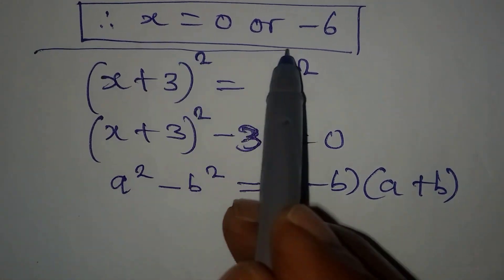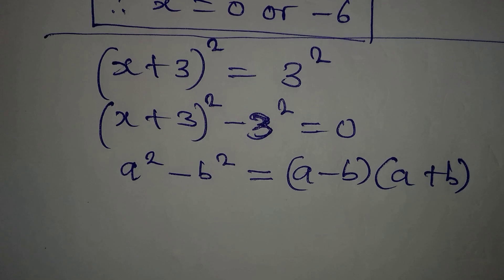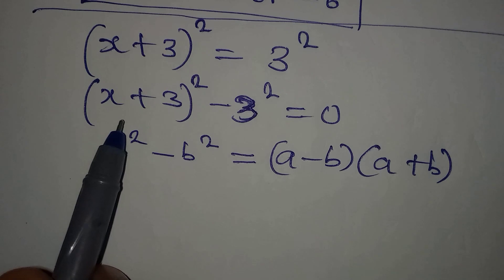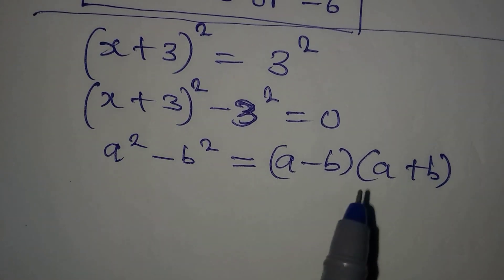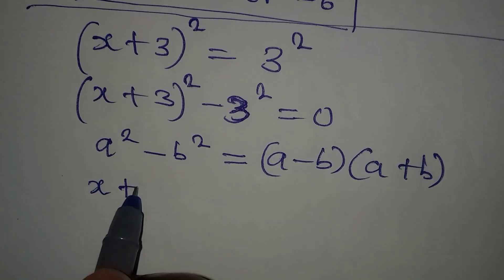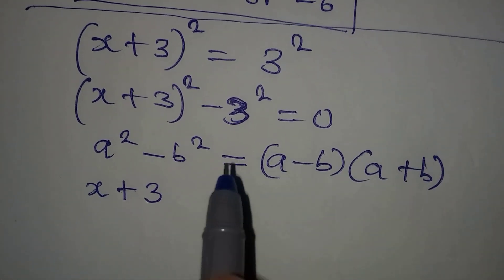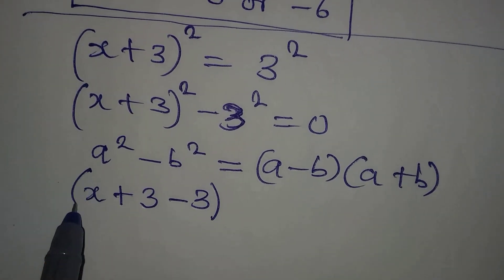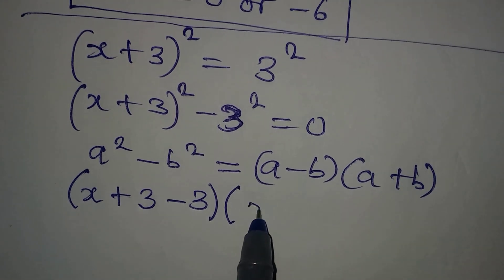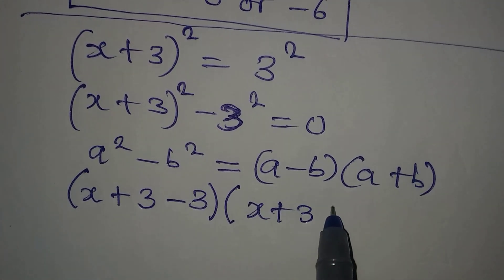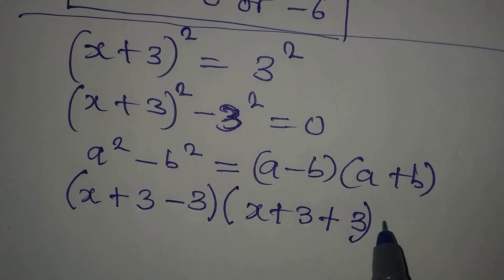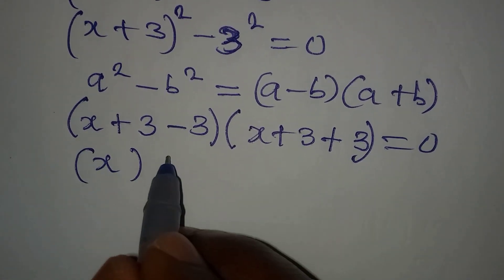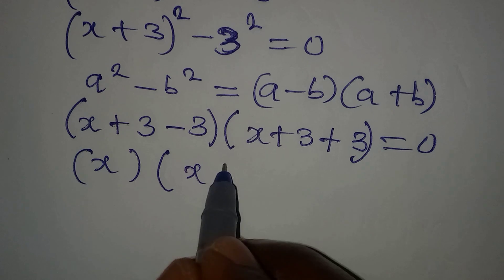Remember, we are using the second method now. Our a is (x + 3), so in place of a we write (x + 3), then minus b — our b is 3 — so we have minus 3 in the first bracket. In the second bracket, we have a + b: a is (x + 3) and b is still 3, so plus 3. Simplifying, the first bracket gives x, and the second bracket gives (x + 6).